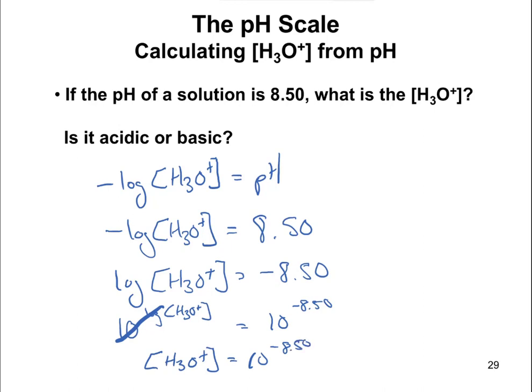And it leaves us with just the concentration of H3O+ is equal to 10 to the negative 8.50. And there's a button on your calculator, a lot of times it's the second function right above where it says log on your calculator. But if you hit that one, you'll be able to get your answer. In this one, you're going to get 3.2 times 10 to the negative 9 molar. We need to put our molar in there for units. So 3.2 times 10 to the negative 9 molar would be your answer here.